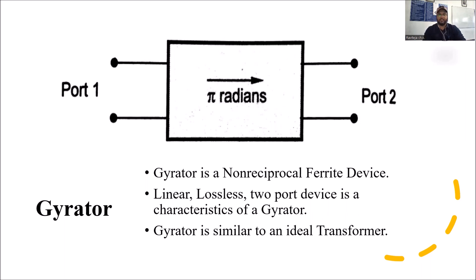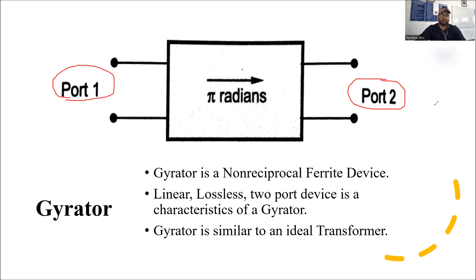These are the main stressed characteristics of a gyrator. This particular gyrator is somewhat similar to an ideal transformer. It is a ferrite device having two ports — the input port is considered as port 1 and the output port is considered as port 2. Whenever an input signal or electromagnetic wave or microwave is given as input through the gyrator, we analyze the expected output.